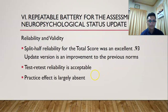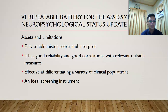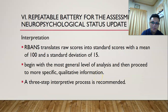RBANS overall has sound psychometric properties with practice effects largely absent. It is easy to administer, score, and interpret, and is effective in a variety of clinical populations, making it a very ideal screening instrument. RBANS' raw scores are translated into standard scores with a mean of 100 and standard deviation of 15.